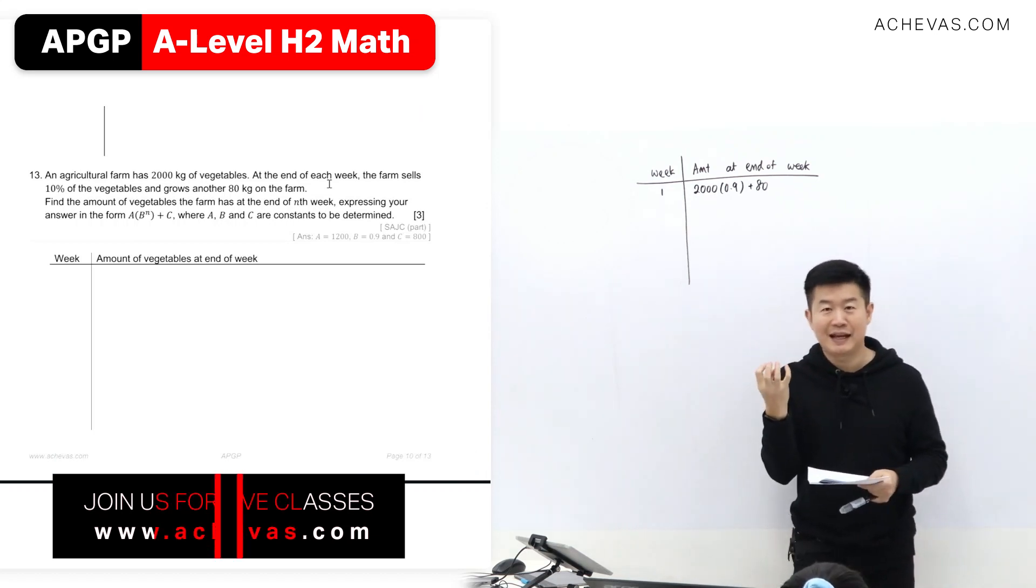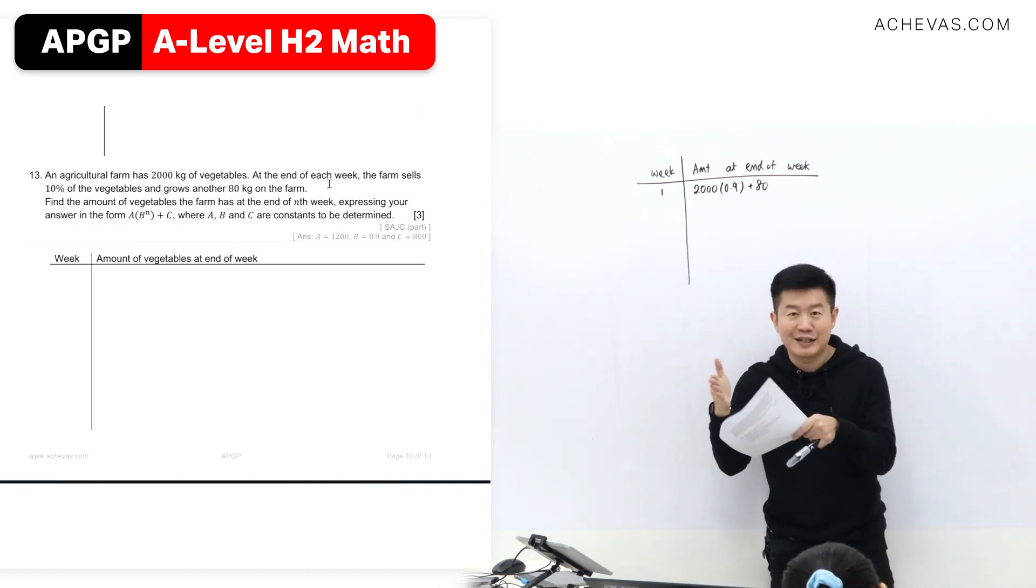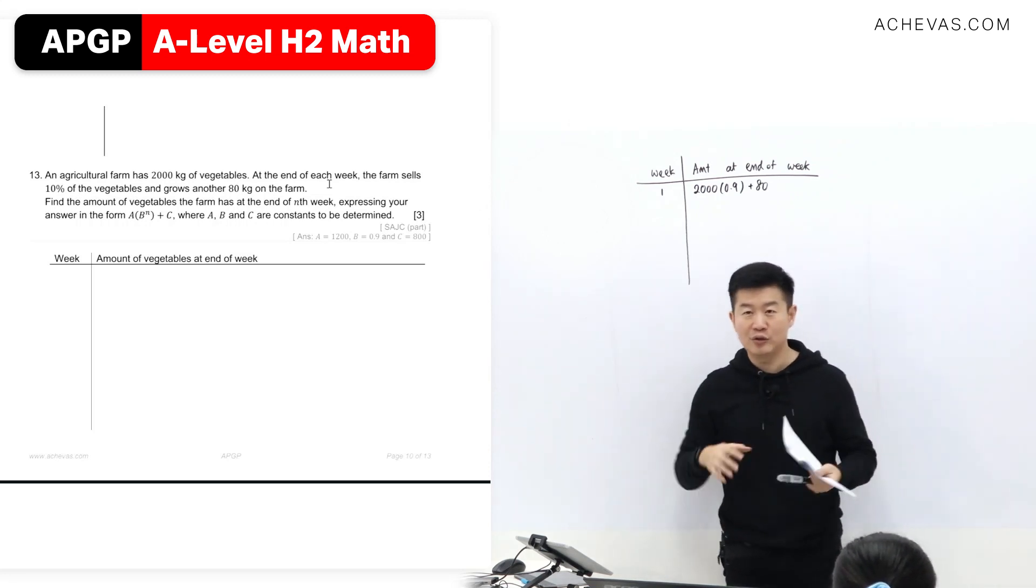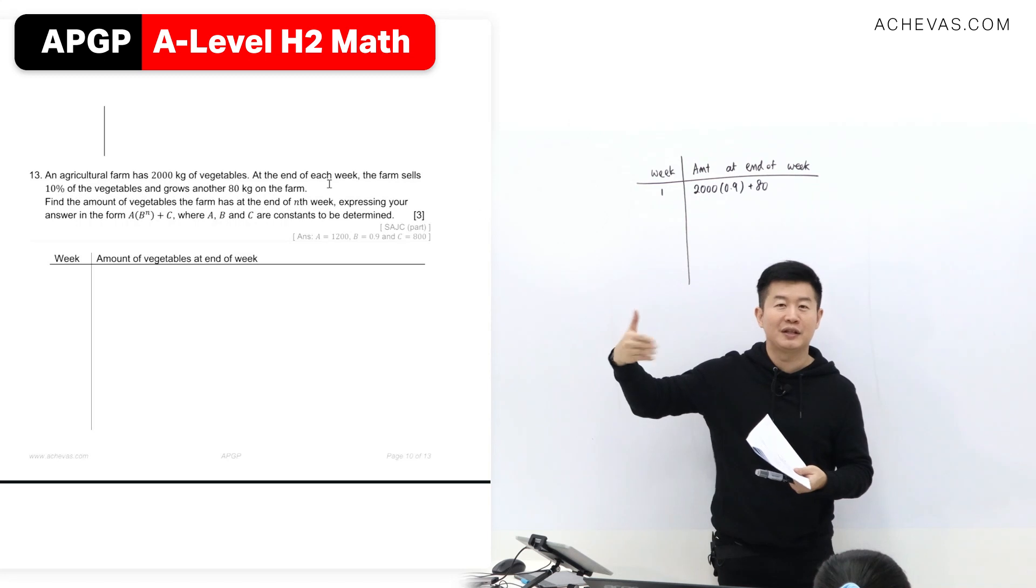Because the question gives me this additional information, that's why I know I just need the first few terms. I can already decide that the pattern is going to continue. I don't need to do general proof because the question really tells me the general thing.